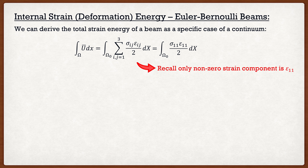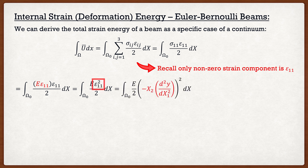We can simplify this even further, because for Euler-Bernoulli beams, we don't consider Poisson effects. Therefore, σ_11 is actually equal to the Young's modulus E multiplied by ε_11. Taking this formula and multiplying ε_11 in, we get the integral over the domain of E·ε_11² divided by 2. We can do one more simplification: from the theory of Euler-Bernoulli beams, ε_11 is equal to negative x₂ multiplied by the second derivative of our deflection function. So we substitute that into our internal strain energy formula.